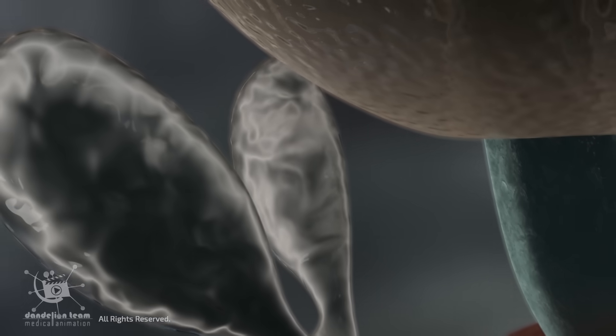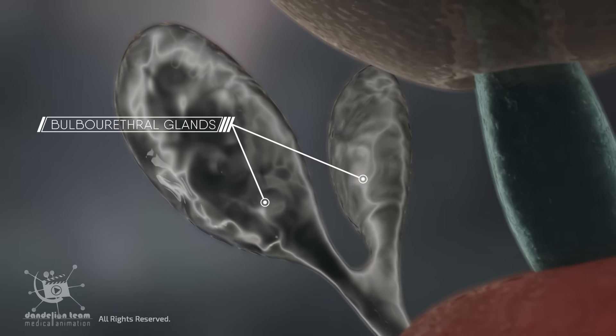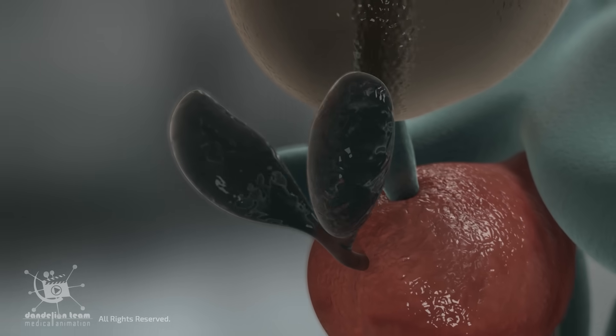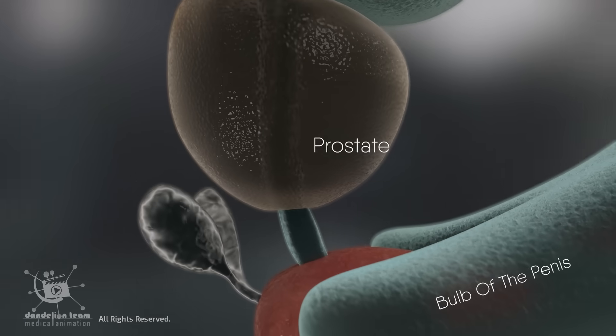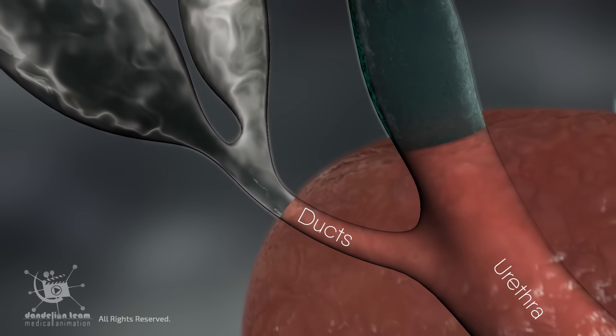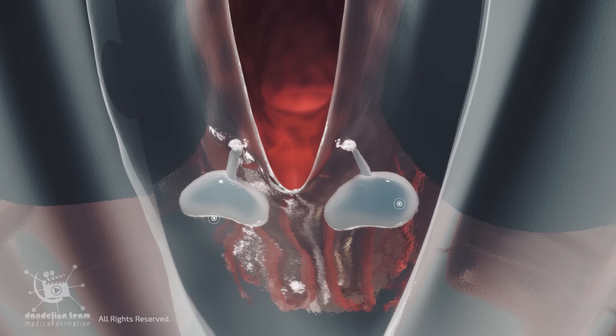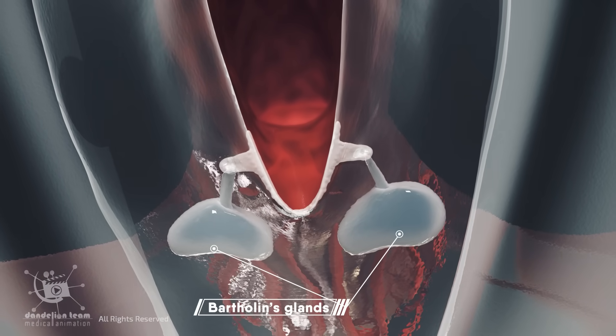Pre-ejaculate comes from tiny but powerful glands called Cowper's or bulbourethral glands. Two small pea-sized glands that are located just below the prostate and superior to the bulb of the penis, connected to the urethra by tiny ducts. They are homologous to Bartholin glands in females, which also produce lubricating fluid.